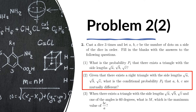This is a continuation of problem 2. Problem 2 part 2 reads: given that there exists a right triangle with side lengths √A, √B, √C, what is the conditional probability P₂ that A, B, C are mutually different?